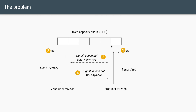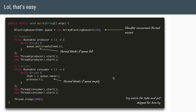Basically, we want a simple queue of fixed capacity. We can have multiple producer threads adding items to the queue and multiple consumer threads removing items. If the queue is full, the producer thread needs to go into a wait state. If the queue is empty, there is nothing to consume and the consumer thread should wait too.